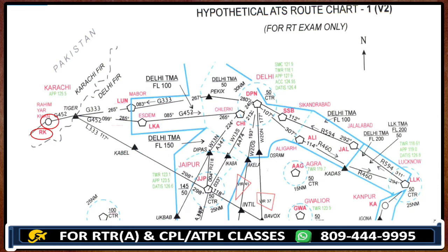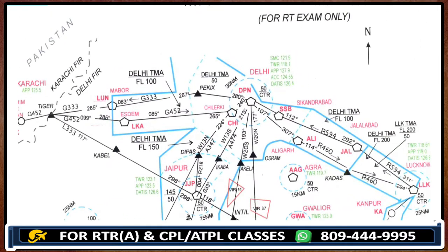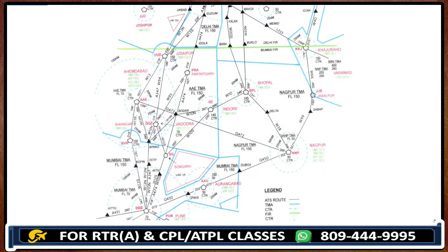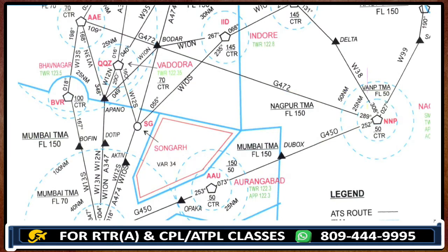We would discuss NDB in detail in part two and radio navigation classes. Let's find some more NDBs. Starting from Rahim Ya Khan — Romeo Kilo — let's move towards Delhi. There is no NDB there. On the right side, Lima Kilo is for Lucknow. If you go from Lucknow to Kanpur, there is Kilo Alpha — that is also an NDB in Kanpur. There is also Sierra Golf nearby Songbird — Sierra Golf is an NDB.